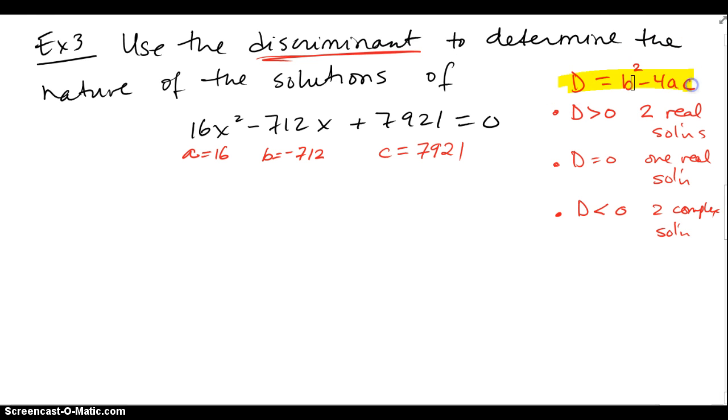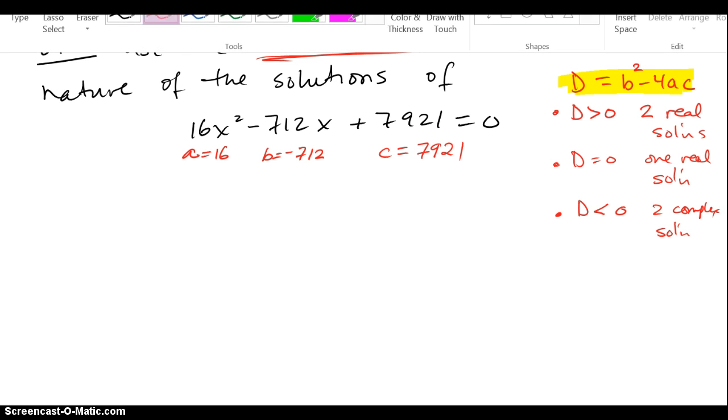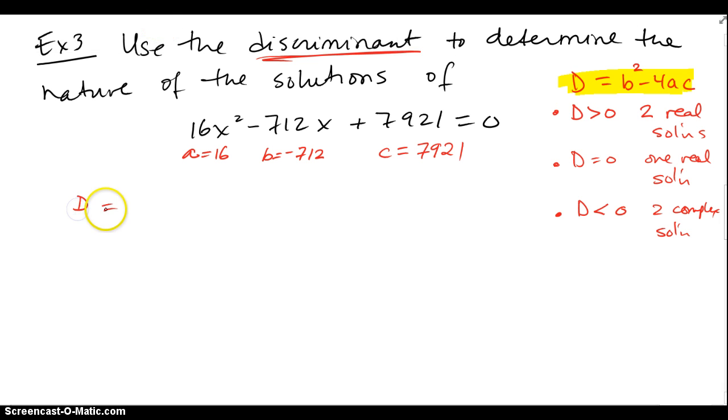And I'm going to end up with d equals, b is right here, negative 712, quantity squared, minus 4a, 16, and c is 7921.